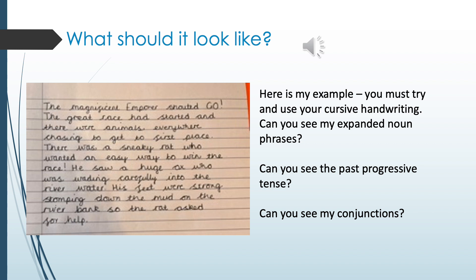Here's my example of this part of the story — you can see that I've been trying to use my features as much as I can. The magnificent emperor shouted go! The great race had started and there were animals everywhere chasing to get to first place. There was a sneaky rat who wanted an easy way to win the race. He saw a huge ox who was wading carefully into the river water. His feet were strong, stomping down the mud on the river bank, so the rat asked him for help.